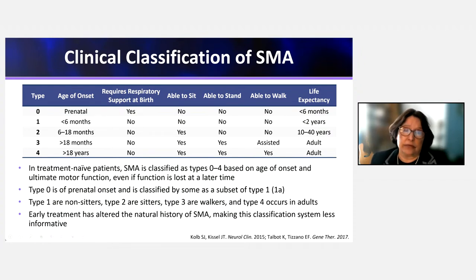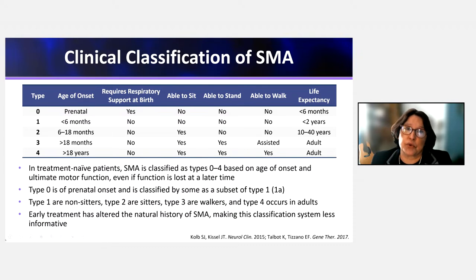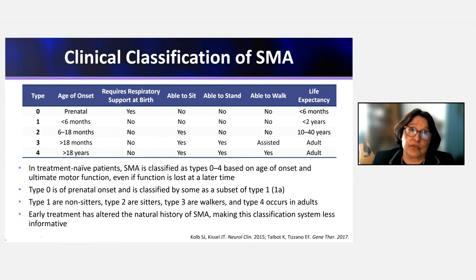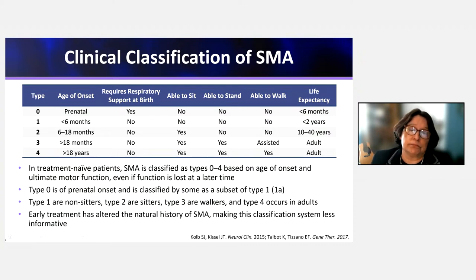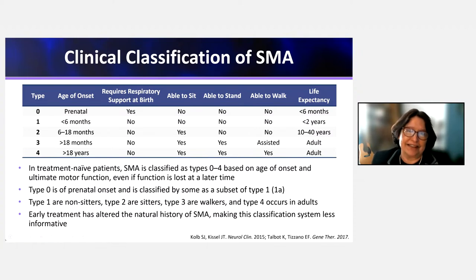Type 1 SMA, the old Werdnig-Hoffmann, presents under six months of age. These children develop need for respiratory support as they age, as well as dysphagia and gastrointestinal support needs. By definition, they never sit, and without respiratory or nutritional support, survival past age 2 is very improbable. Type 1 is the most common type, comprising about 60% of all SMA cases born in a given year.